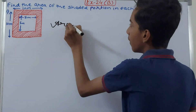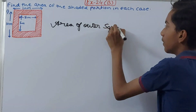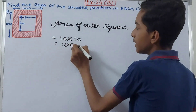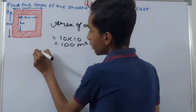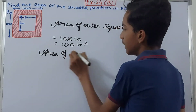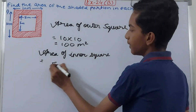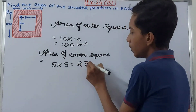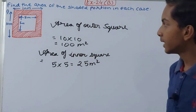Area of the outer square is 10 × 10 = 100 square meters. Area of the inner square is 5 × 5 = 25 square meters.